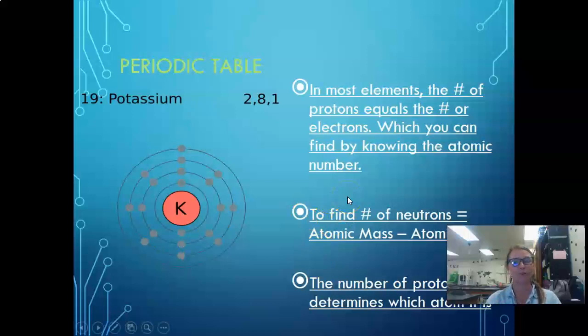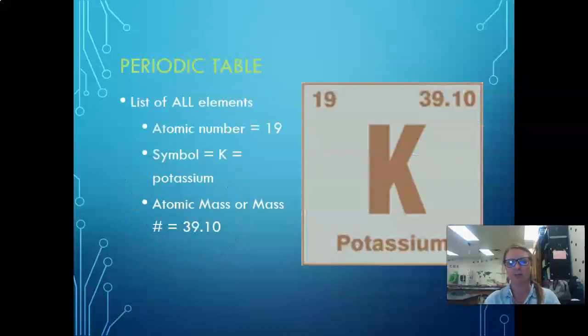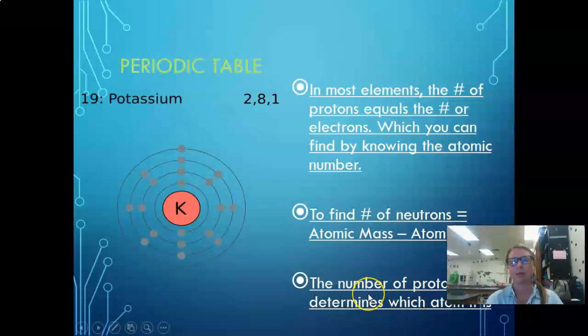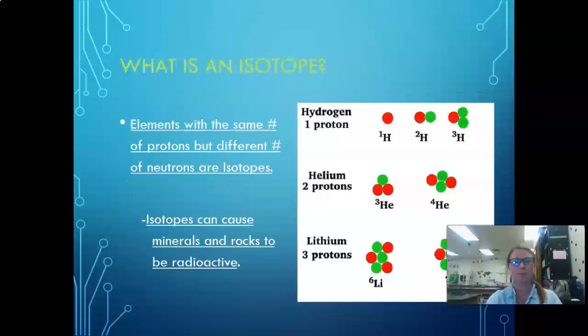To find the neutrons, all we have to do is take the atomic mass minus the atomic number. So let's go back and take a look. The atomic mass of this object is 39.10, and we're going to subtract that from 19, and that gives me 20.1. So that means that there are 20 neutrons in the element potassium. And finally, the number of protons determine what atom it is. Electrons sometimes can get a little funky. Neutrons can definitely become funky, especially when we get into radioactive decay. But our protons are normally the ones that stand strong.